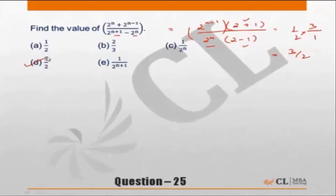For those of you who get confused or who are looking for a faster method, why don't we just take a value of n? Which means put n equal to 1 in the expression and the choices.